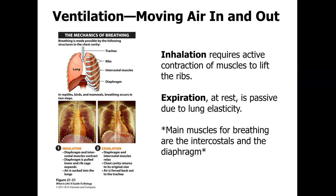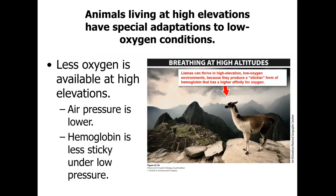In mammals, inhalation requires active contraction of the diaphragm and intercostal muscles: the diaphragm is pulled lower and the rib cage expands, sucking air in. Exhalation occurs when the diaphragm and intercostal muscles relax, the chest cavity returns to normal size, the diaphragm rises, and air is forced out through the trachea and mouth or nose.